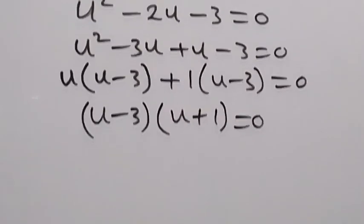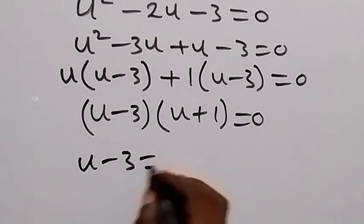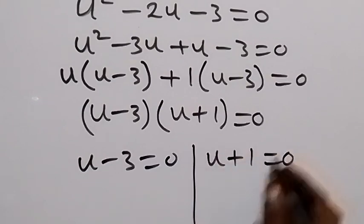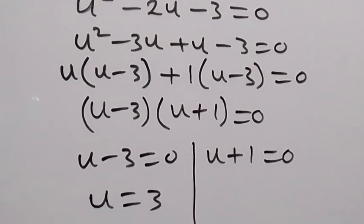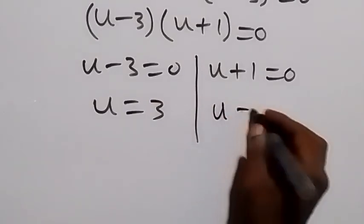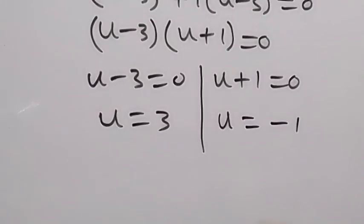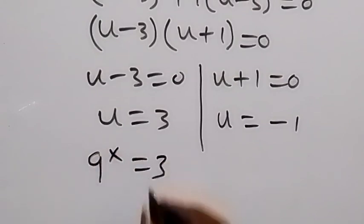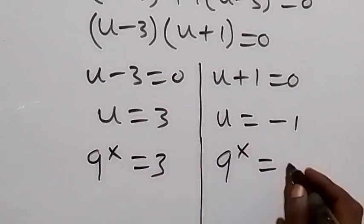So, we have two possible cases here. We have u minus 3 equals to 0, or we have u plus 1 equals to 0. From here, u is equal to 3. And also from this side, we have u equal to minus 1. And we represent u as 9 raised to power x. So we can see, 9 raised to power x equals to 3 from here, and on this side, 9 raised to power x equals to minus 1.